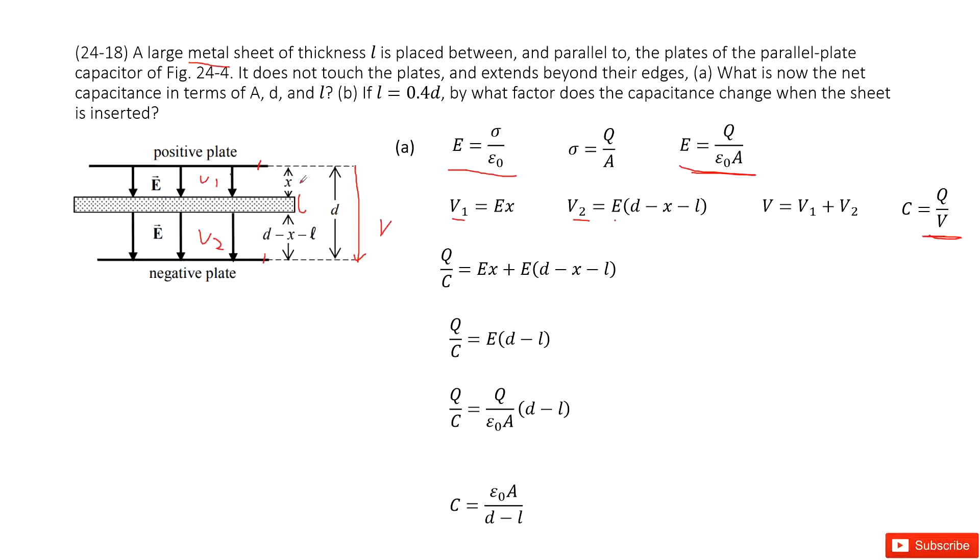As we discussed, the total potential V equals V1 plus V2. The V on the left-hand side can be written as Q over C. So this function can simplify.